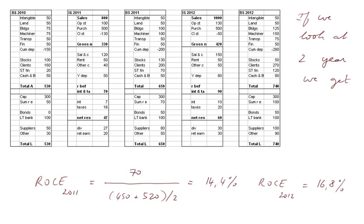Finally, let's look at 2 years. We just looked at this year. Now let's look at 2 years. The ROCE of this year, which is 2011, is the return before interest and taxes, 70, divided by the average capital employed, that is this figure average with that figure. That is 450 plus 520 divided by 2. This gives 14.4%. And the ROCE of 2012, we saw is 90 divided by the average of this figure and that figure. And we got 16.8%.